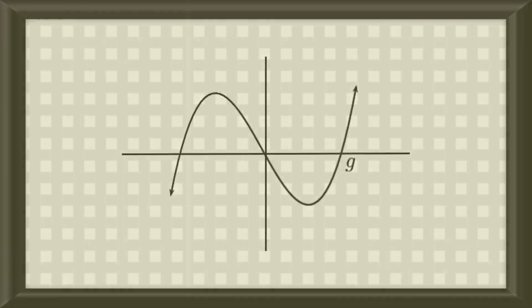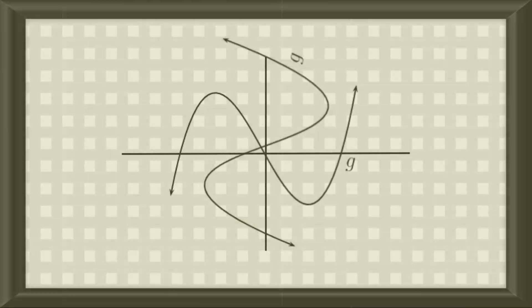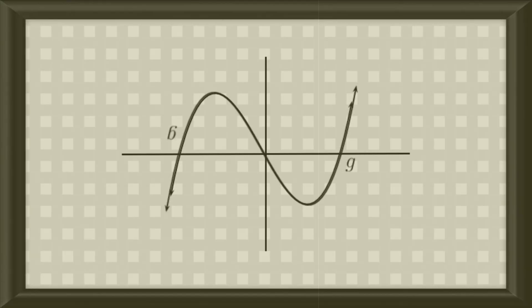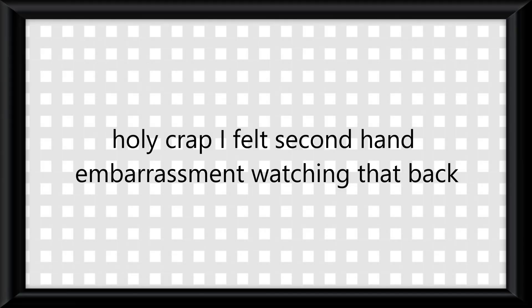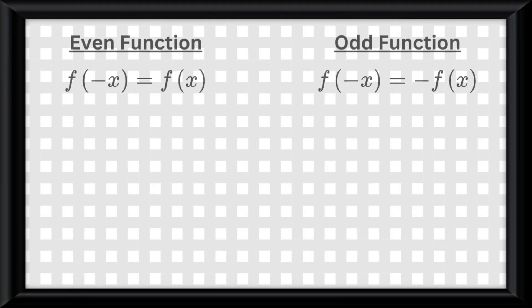A function is odd if it satisfies the property f of negative x equals negative f of x, or if rotated across the origin 180 degrees, it remains looking the exact same.